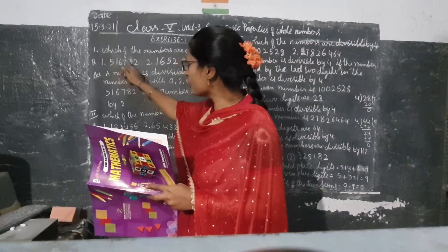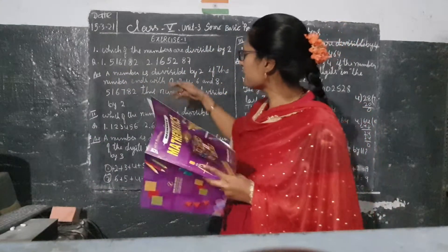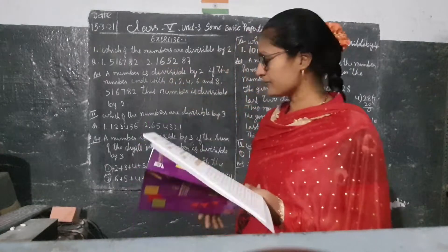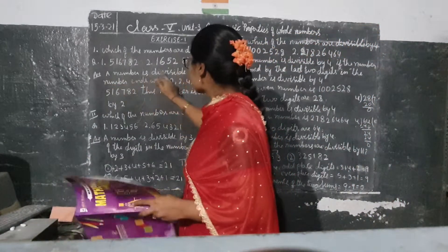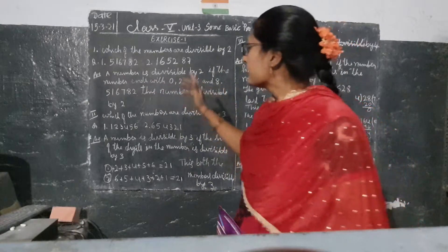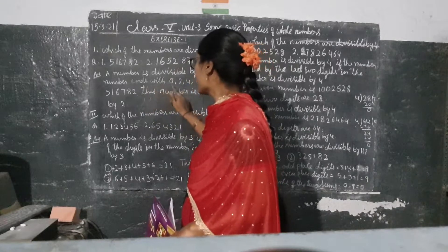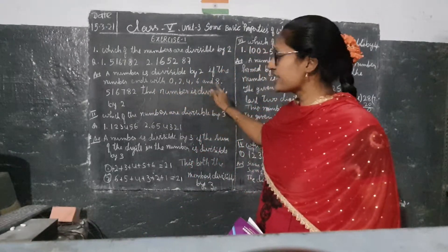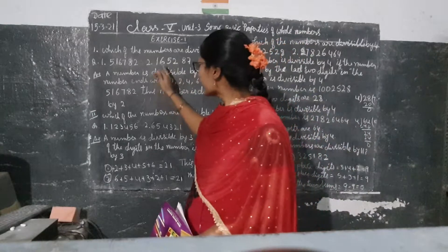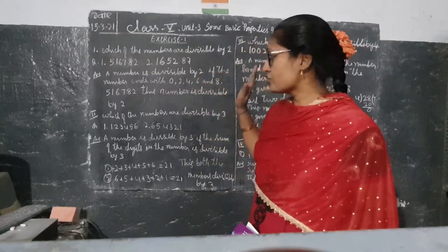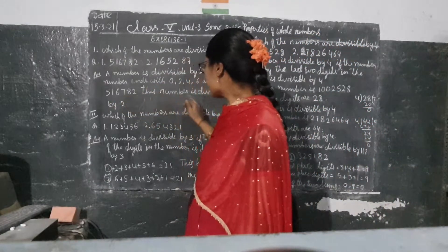See the first number — the digits are 5, 1, 6, 7, 8, 2. In another number the digits are 1, 6, 5, 2, 8, 7. What is the rule? A number is divisible by 2 if the number ends with 0, 2, 4, 6, or 8. See the ending digit of the first number — 2 is there, so it is divisible by 2. The second number ends with 7 — 7 is not divisible by 2, so that number is not divisible by 2.